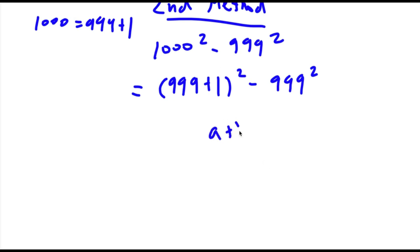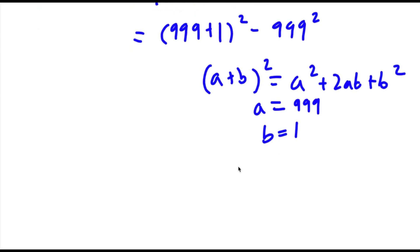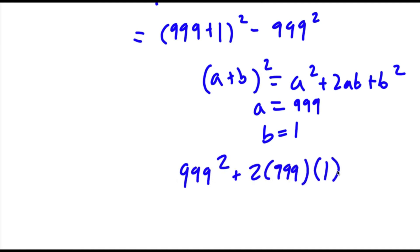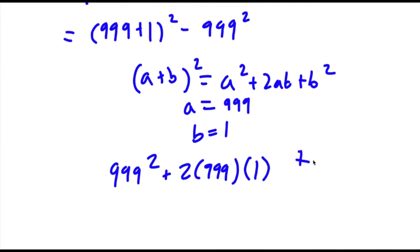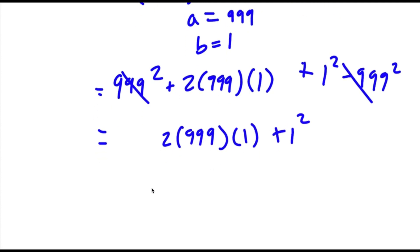Now, if I have something in the form (a plus b) squared, this is equal to a squared plus 2ab plus b squared. So in this case, a is equal to 999 and b is equal to 1. So this would be 999 squared plus 2 times 999 times 1 plus 1 squared, and then I have my minus 999 squared at the end. These two cancel out, so I'm left with 2 times 999 times 1 plus 1 squared. Now, 2 times 999 is 1998, so I have 1998 plus 1, which is equal to 1,999.